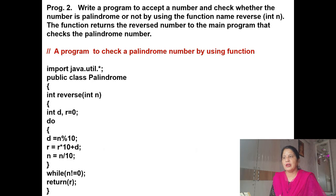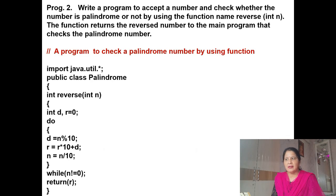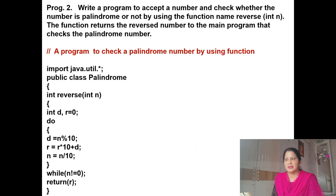Next program: write a program to accept a number and check whether it is palindrome or not by using function name 'reverse(int n)'. The function returns the reverse number to the main program to check the palindrome. We write 'public class palindrome', 'int reverse(int n)', then 'int d, r = 0'. Using a do-while loop, d = n % 10, we store the modulus by dividing by 10.